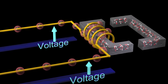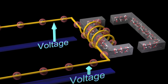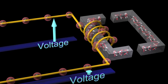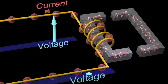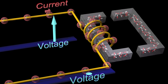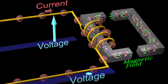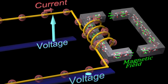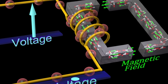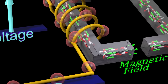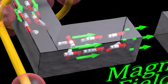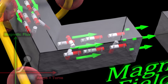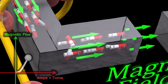If we apply a voltage difference across a coil, a current will flow, creating a magnetic field. A magnetic material can be thought of as containing many miniature magnets that align with the field created by the coil, thereby strengthening the magnetic field.